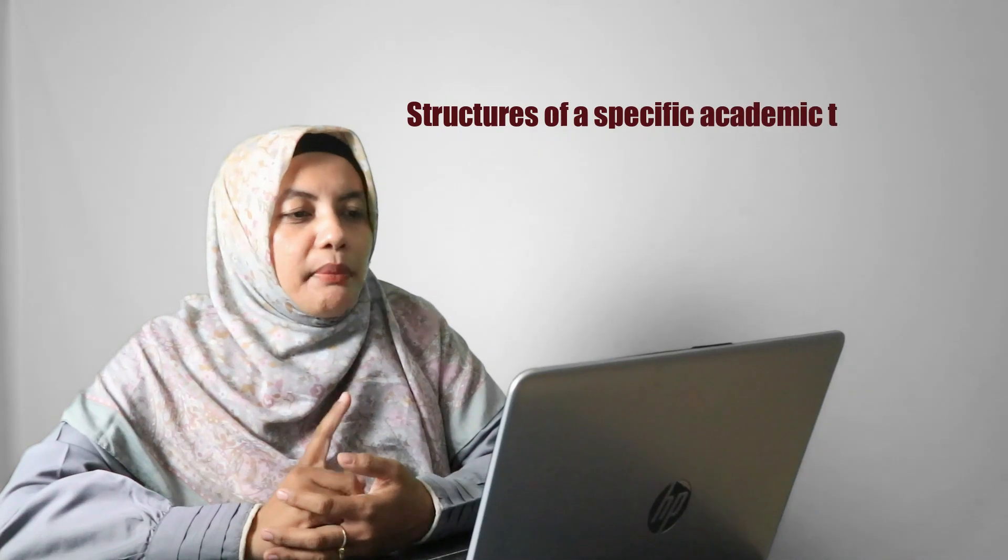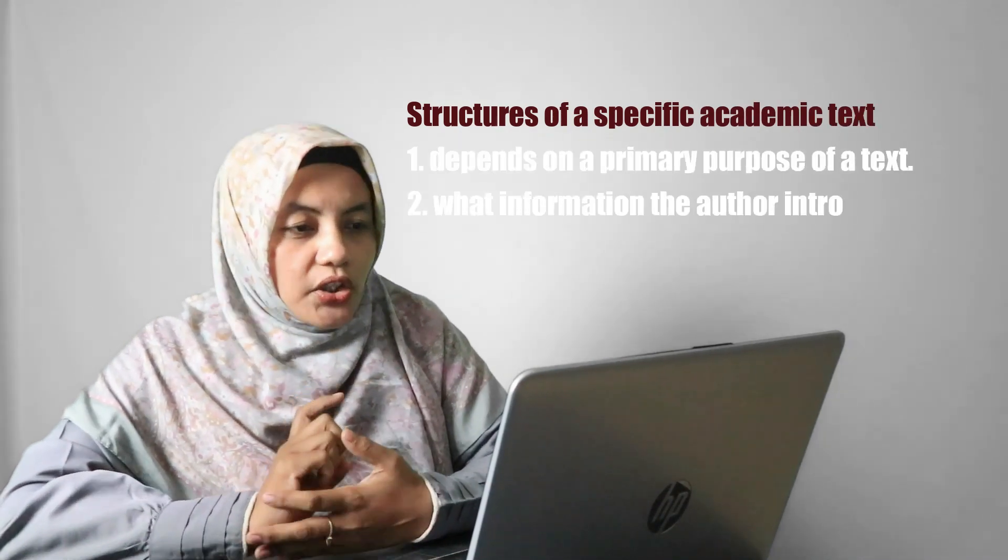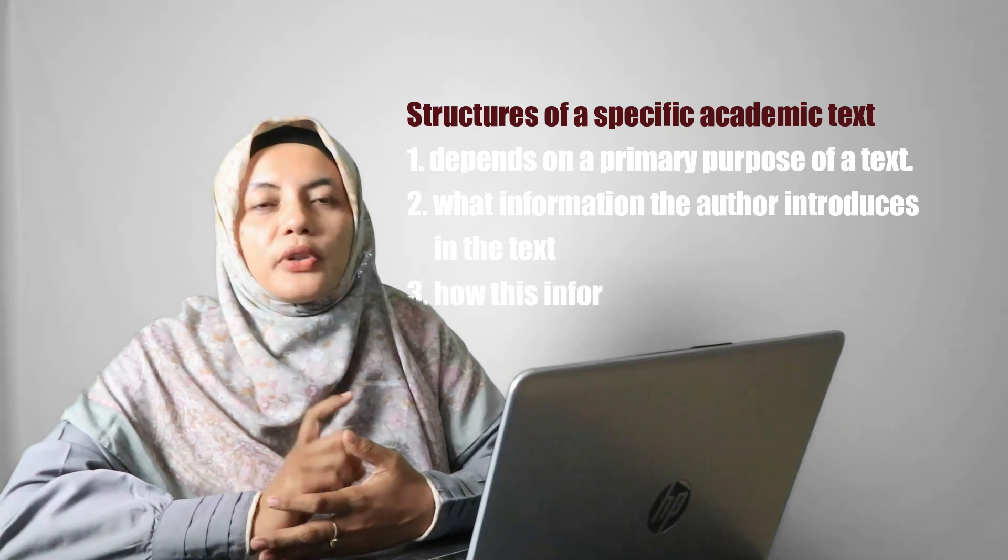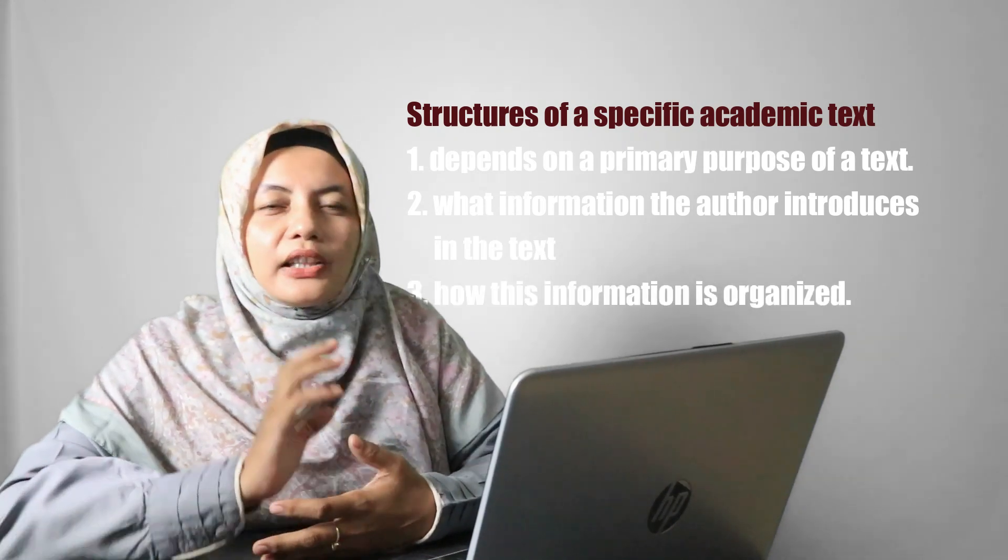Generally, there are several structures in a specific academic text. There are requirements that must be known when studying the structure of a specific academic text. The first depends on the primary purpose of the text. This determines how it is written.